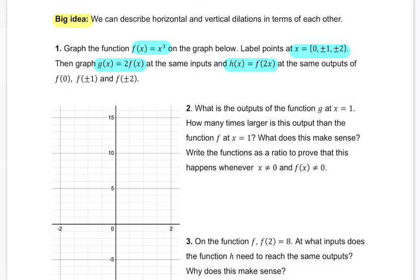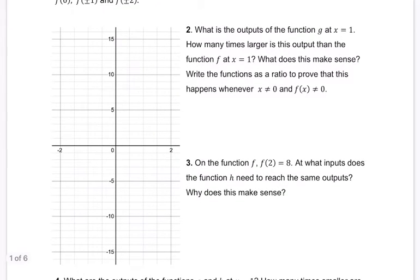f is cubing all of the inputs, and we're plugging in 0. 0 cubed is 0. 1 cubed is 1, and 2 cubed is 8. And then the other side, we have negative 1 cubed is negative 1. Negative 2 cubed is negative 8. And we have this rough sketch of our function, something like this. And this is the function f.